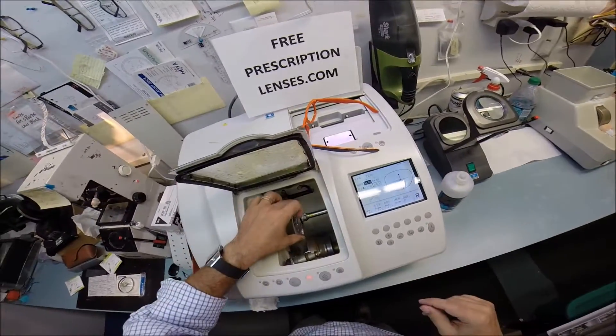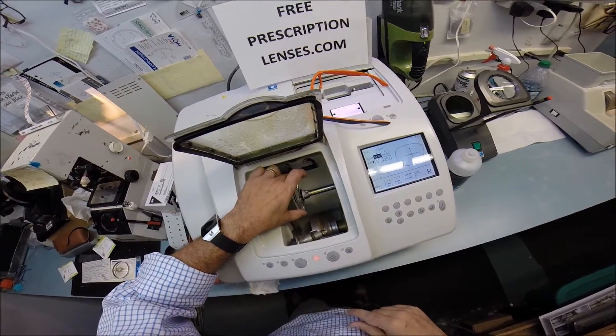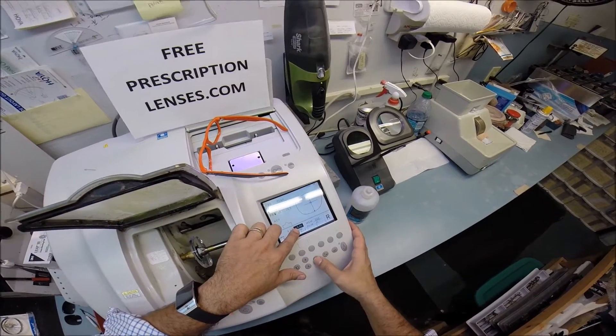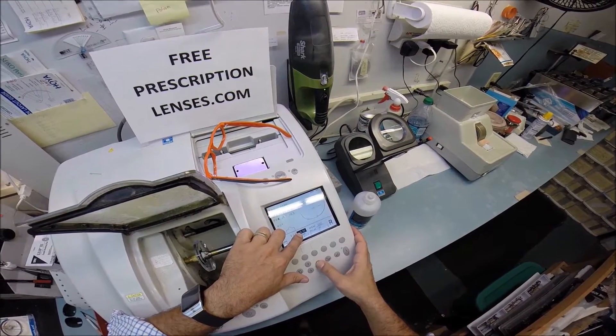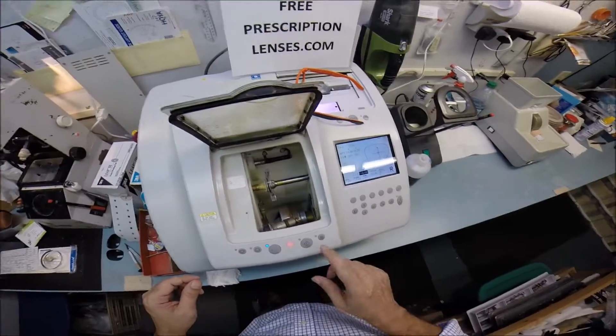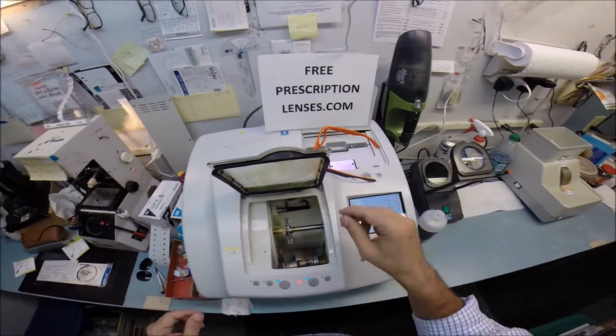So I'm going to take your right lens. Put it into the chuck. Now I know from experience that the 55 has a deeper bevel than the 52 that I'm wearing. So I'm going to take it down about half a millimeter. Now I'm hitting the start button.